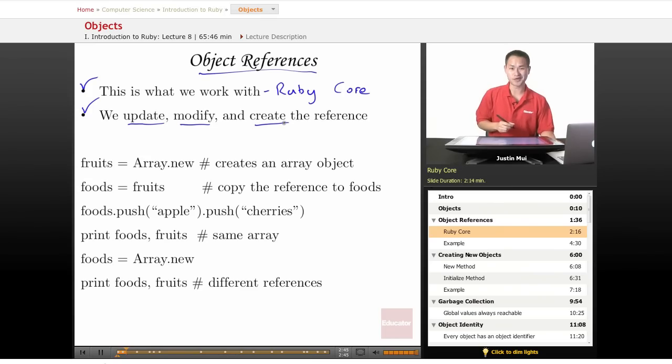So we have an example here. What we're going to do is first, we're going to create an array.new. It's going to be stored as an array object into fruits. And you notice here, what we're doing is we're creating another value called foods that equals fruits. What this does is it's going to copy the reference to foods.